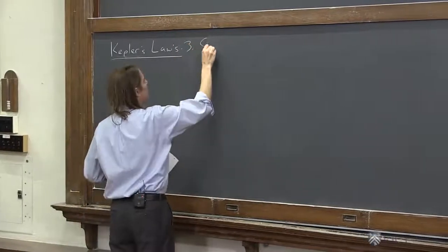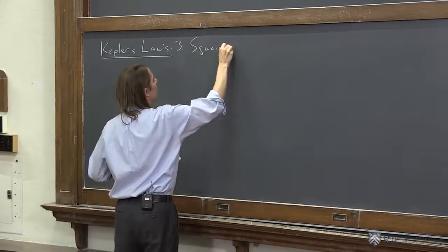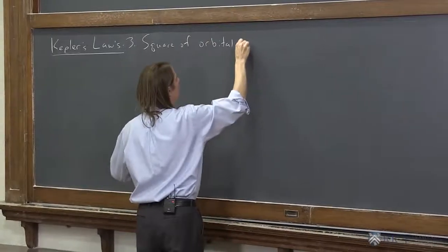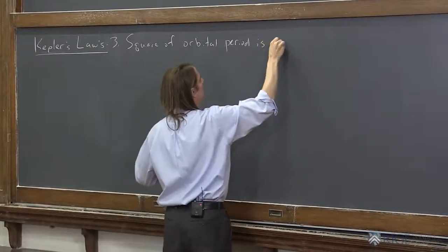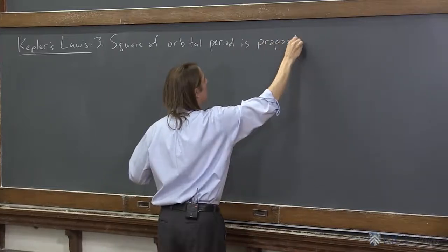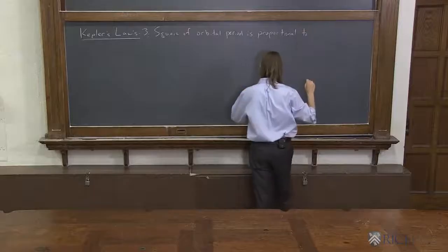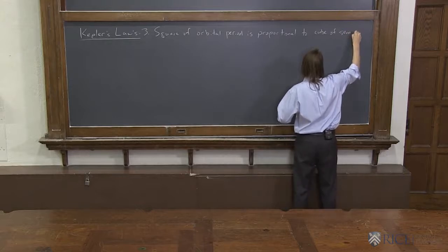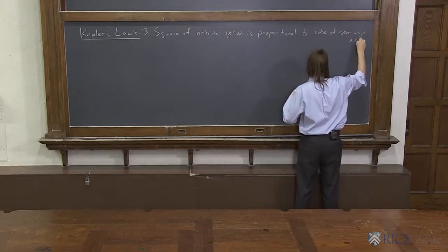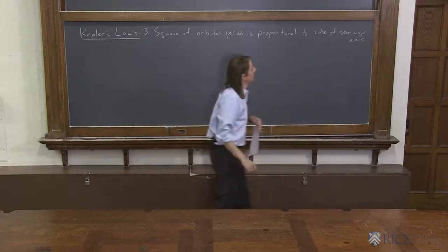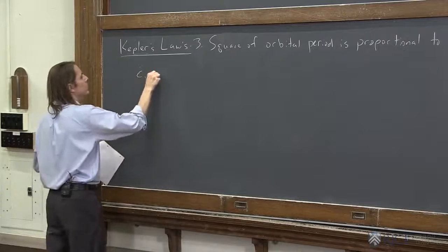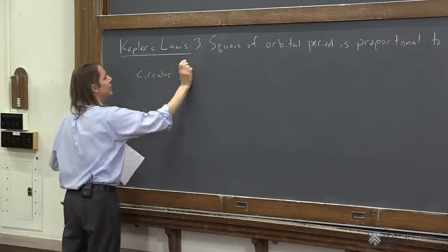It sounds a little odd. So the square of the orbital period is proportional to the cube of the semi-major axis. Wow. If you've stared at it long enough, you'll see it. Let's do it for a circular orbit, since we're good at those, and see if we find that this is true.